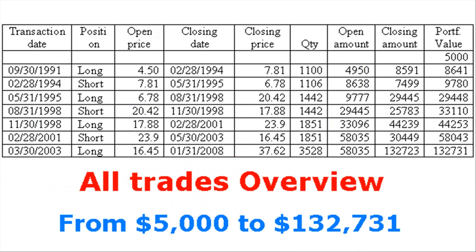Have a look at this table showing all transactions, to see the final result of 17 years of long term trading in this stock. Just looking once a month, just looking at trend lines, support and resistance lines, and only making 7 trades. We started with $5,000 and now have more than $132,000. Not bad for an hour's work once a month. That makes 2,600% profit on your starting capital, or more than 20% compounded interest per year.